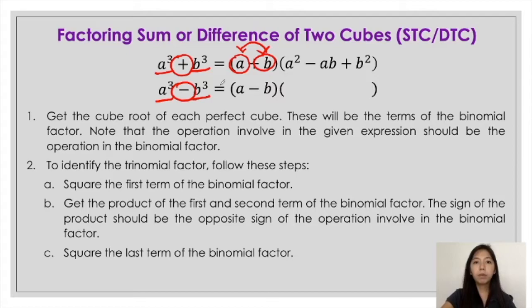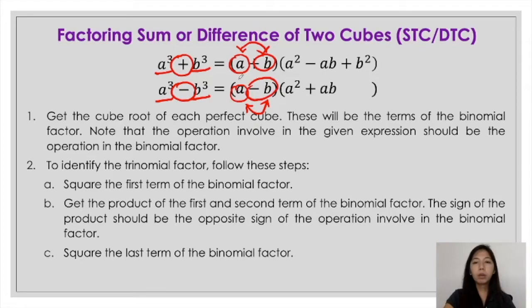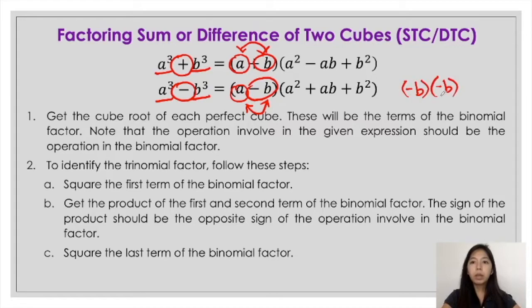Now to get the terms in the trinomial factor, look at the binomial factor. The first term is a, and the square of a is simply a squared. Multiply the two terms: a times negative b is negative ab, but you have to get the opposite sign, so that becomes positive ab. When you get the square of negative b, it would be positive b squared. This is because squaring negative b means negative b times negative b, and negative times negative is positive. So just recall the rules in multiplying integers — that also applies here.